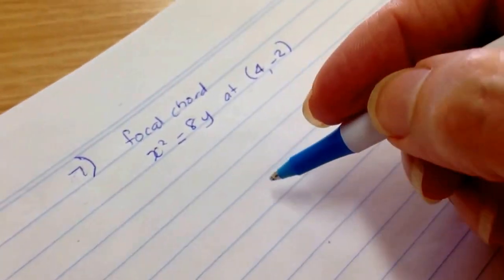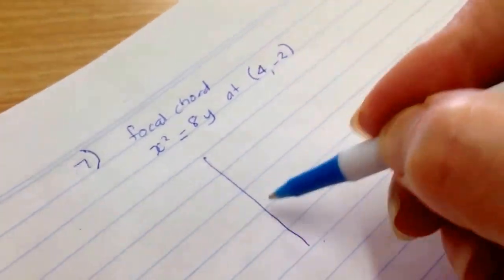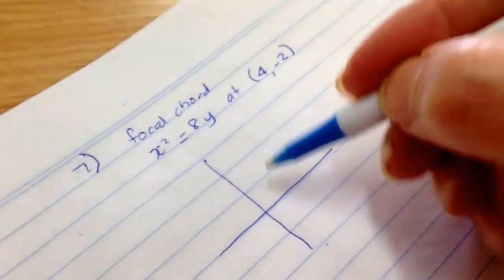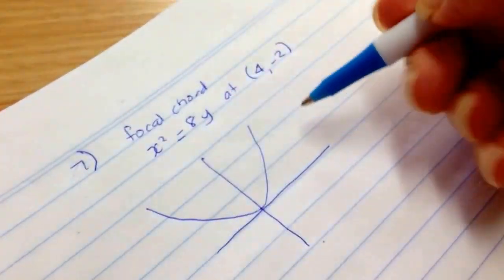Now, you know that a focal chord will look like this, so you've got your parabola. x squared equals 8y will be a concave up parabola which goes through (0, 0).